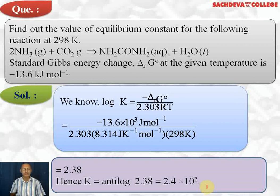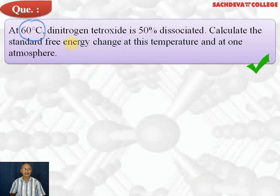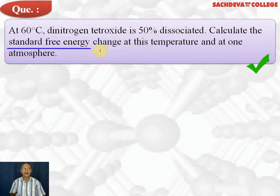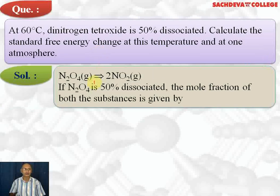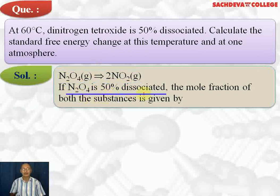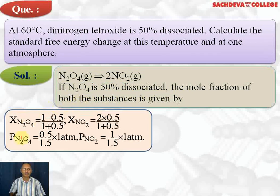Next question: at 60°C, dinitrogen tetroxide (N₂O₄) is 50% dissociated. Calculate the standard free energy change at this temperature and at one atmosphere. We write the equation: N₂O₄(g) → 2NO₂(g). If N₂O₄ is 50% dissociated, we calculate the mole fraction of each substance. Initially N₂O₄ is 1 and NO₂ is 0.